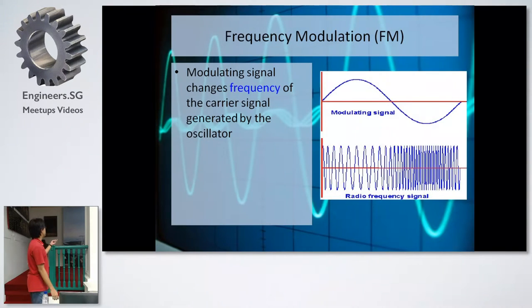For frequency modulation, we have the same thing, a modulating signal. But this time, it changes the frequency. It just deviates the frequency up and down, and the FM receiver at the other end will demodulate and get back your transmitted signal.